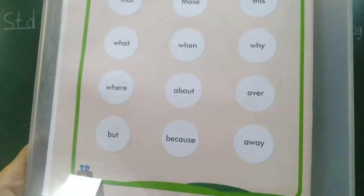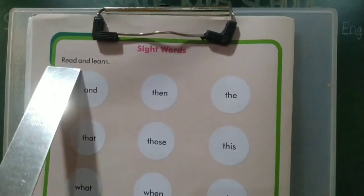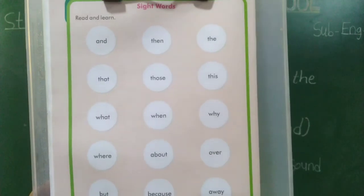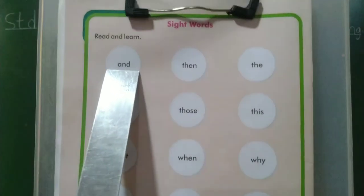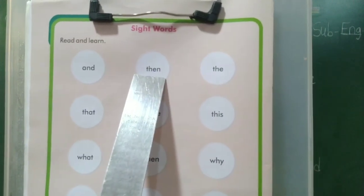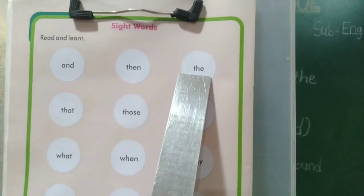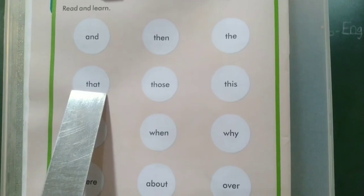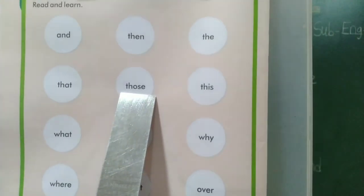Next, page number 78, sight words. Read and learn. Students, I read these words, you repeat after me. A-N-D — and. T-H-E-N — then. T-H-E — the. T-H-A-T — that. T-H-O-S-E — those.